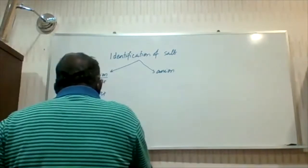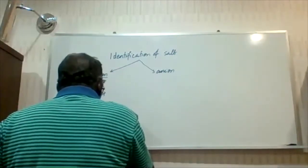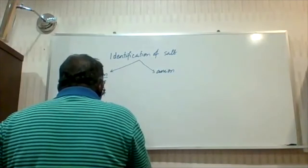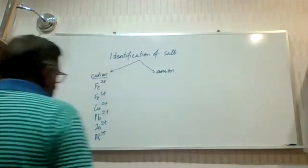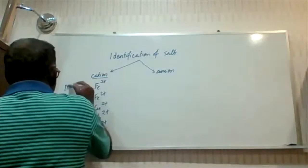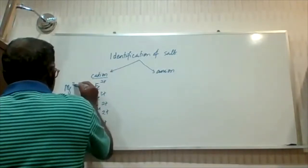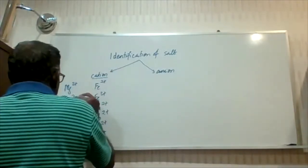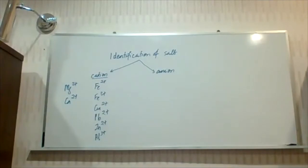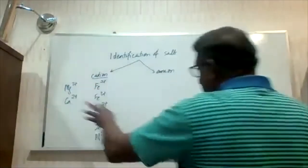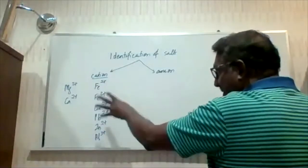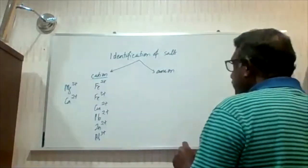Besides that, you need to know the ions Pb²⁺, Zn²⁺, Al³⁺, followed by Mg²⁺ and Ca²⁺. Basically, these are the cations that you will be subjected to. I'm giving you a narrow list of cations that you need to know.